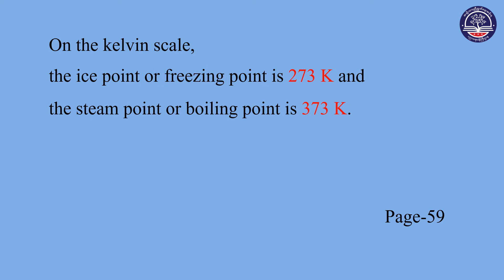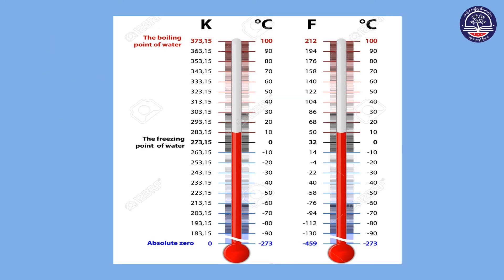You can use 273 for the Kelvin conversion. If you have the reference point in the scheme, you can use 273. So, we can see the relationship between Fahrenheit and Celsius scales.